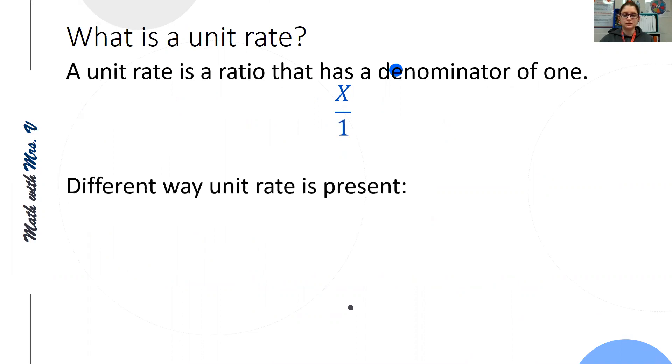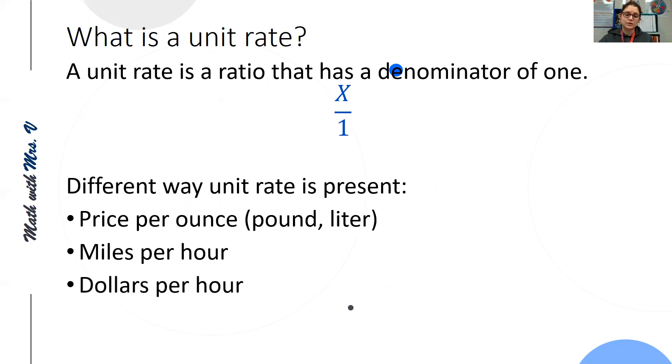Different ways unit rate is presented as price per ounce, price per pound, price per liter, miles per hour, dollars per hour, anything per one.